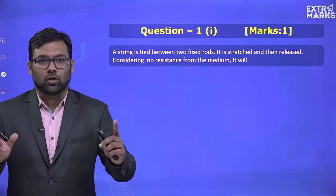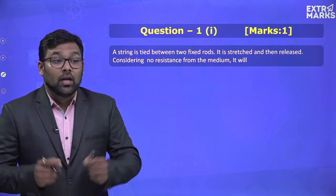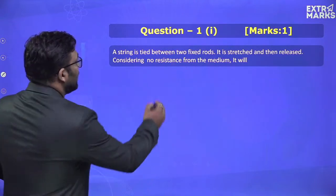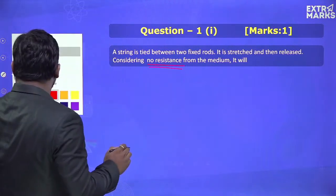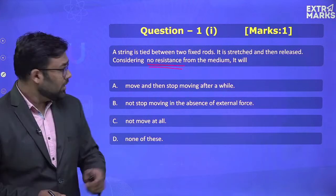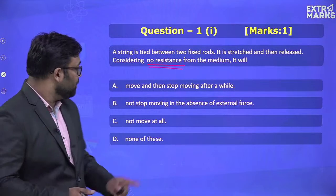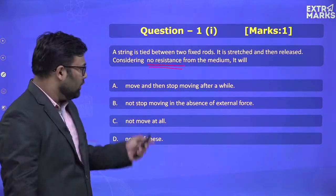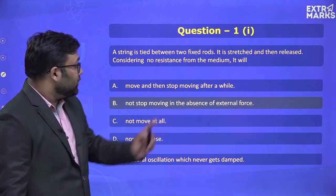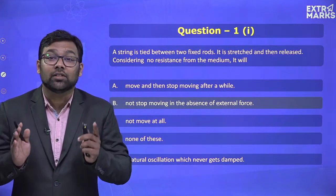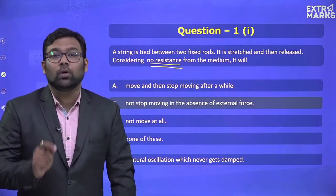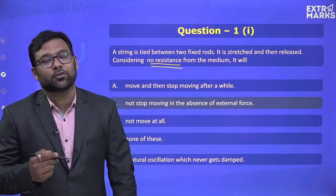For example, this question: a string is tied between two fixed rods, it is stretched first and then released. If we consider no resistance from the medium — now this phrase is very important. The moment we see 'no resistance', that means no external force is acting, no damping. When there is no damping, there will be no stopping of the motion. So the answer is: it will not stop moving in the absence of external force.